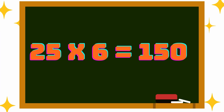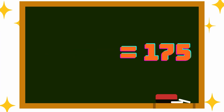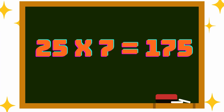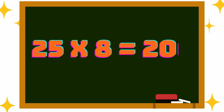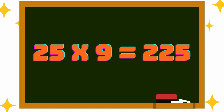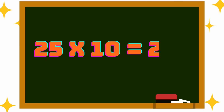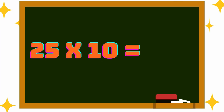25 into 7 is 175, 25 into 8 is 200, 25 into 9 is 225, 25 into 10 is 250.